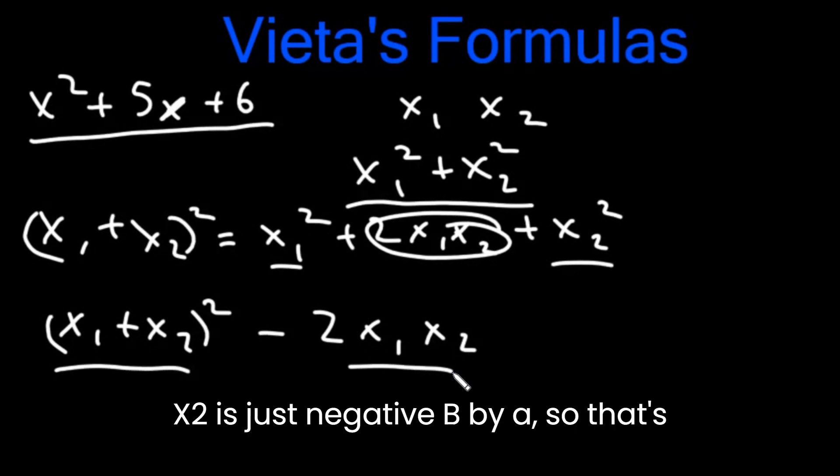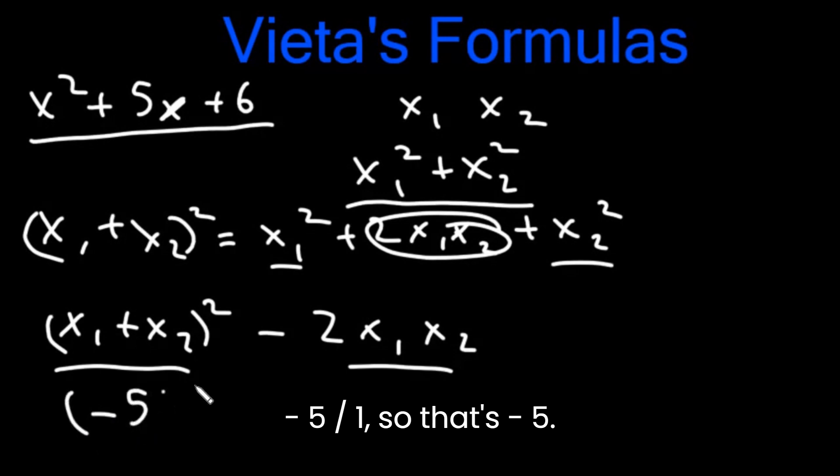x1 plus x2 is just negative b by a, so that's negative 5 over 1, that's negative 5 square minus 2 times x1 times x2. That is c by a, so that's 6 over 1, that's 6. So this is 25 minus 12. This is 13.